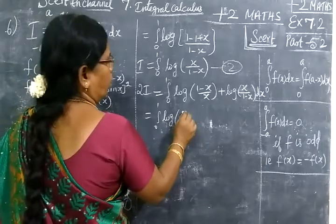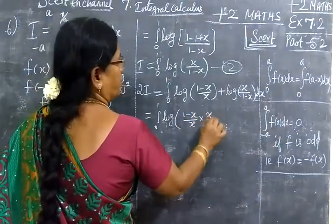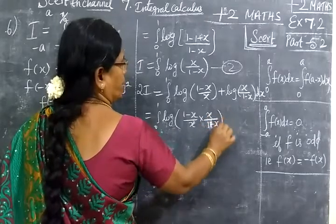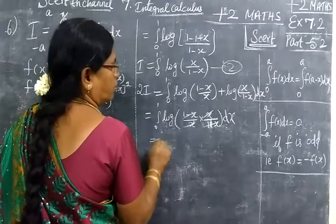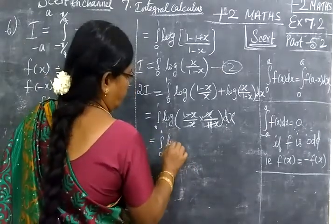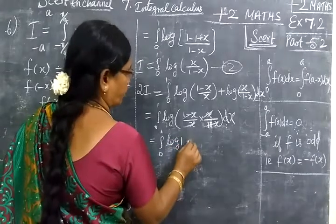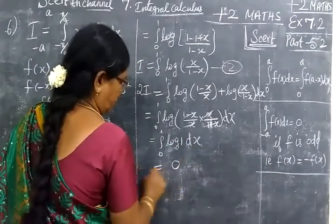So equal to integral 0 to 1 log of. Log m plus log n equals log mn. So (1 minus x)/x times x/(1 minus x) dx. So it will cancel. So we are writing integral 0 to 1 log 1. Log 1 is 0. So the total answer is 0.